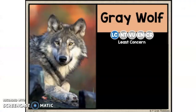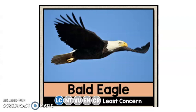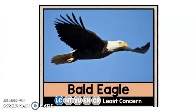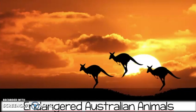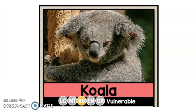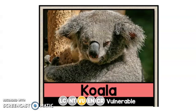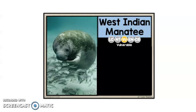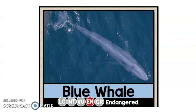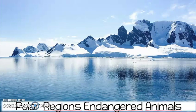For North American animals you have: the gray wolf, the bald eagle, the panther (search 'mountain lion' on the website), the ocelot, and the grizzly bear. For Australian animals we have the koala. In open waters you can choose the manatee, the blue whale, or the green sea turtle. And for polar regions you have the polar bear.